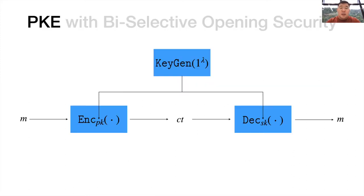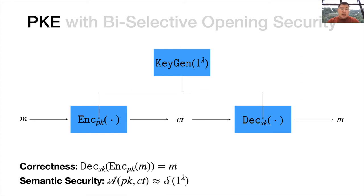So a PKE scheme contains three algorithms: the key generation algorithm, which produces a pair of public key and secret key; the encryption algorithm, which encrypts a message with a public key; and the decryption algorithm, which decrypts a ciphertext with a secret key. Its correctness requires that the decryption algorithm can always recover the correct message from an honestly generated ciphertext, and its security requires that the adversary cannot learn anything from the ciphertext.